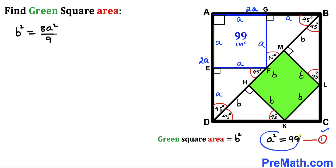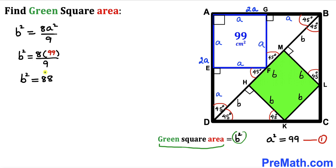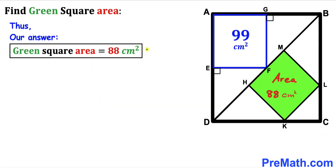From equation 1 we know a² = 99, so substituting: b² = (8 × 99)/9. Since 9 goes into 99 eleven times, and 11 × 8 = 88, we get b² = 88. Therefore the area of the green square is 88 cm². Thanks for watching, and please don't forget to subscribe to my channel for more exciting videos!